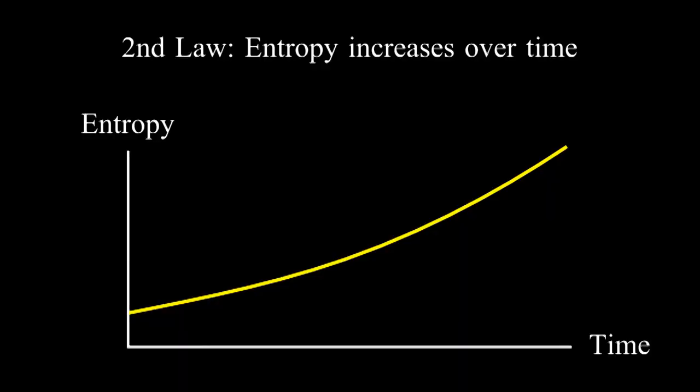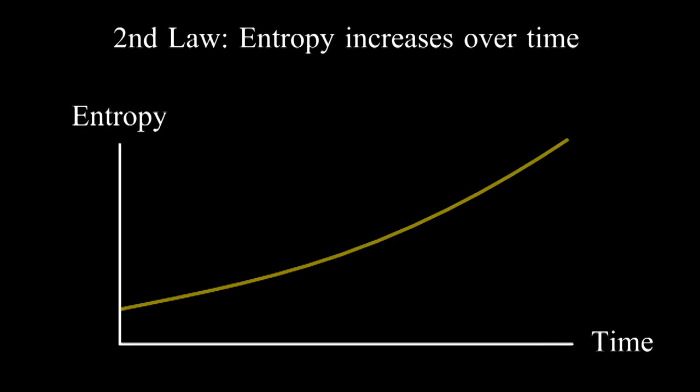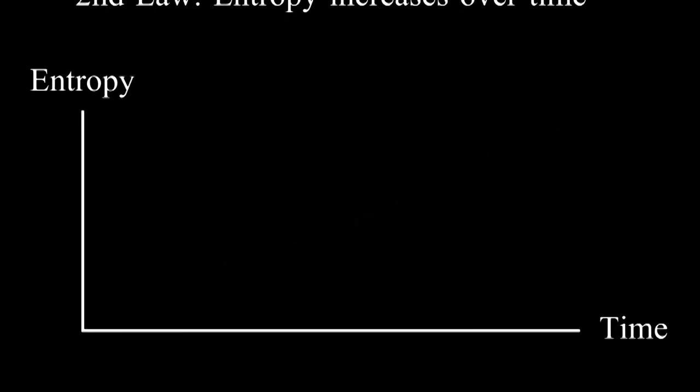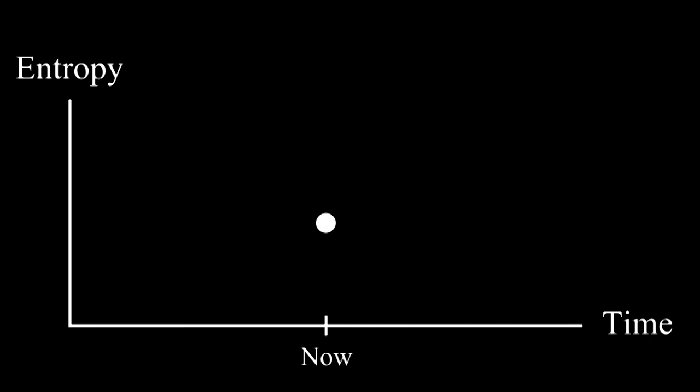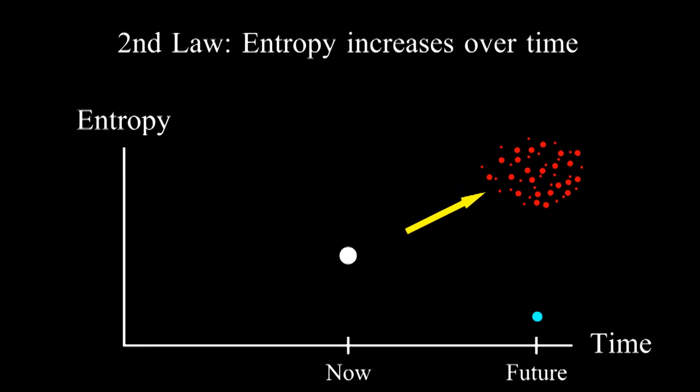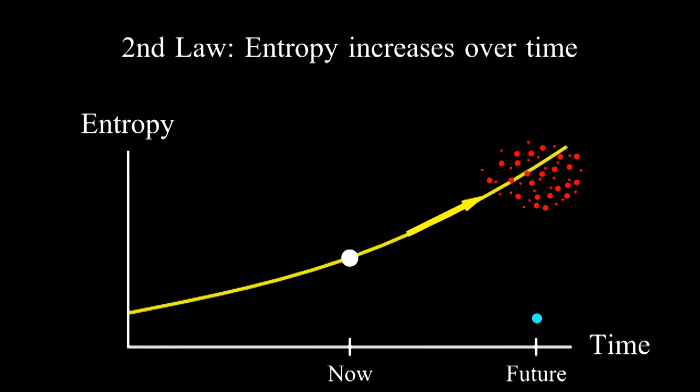There's something very mysterious about the second law of thermodynamics. At first, it may seem to have a straightforward explanation. Suppose now that you are in a state of medium entropy. What's most likely to happen in the future? Is it more likely that you will move to a low entropy state or to high entropy state? Well, there's so many more high entropy states that we expect you to move there.